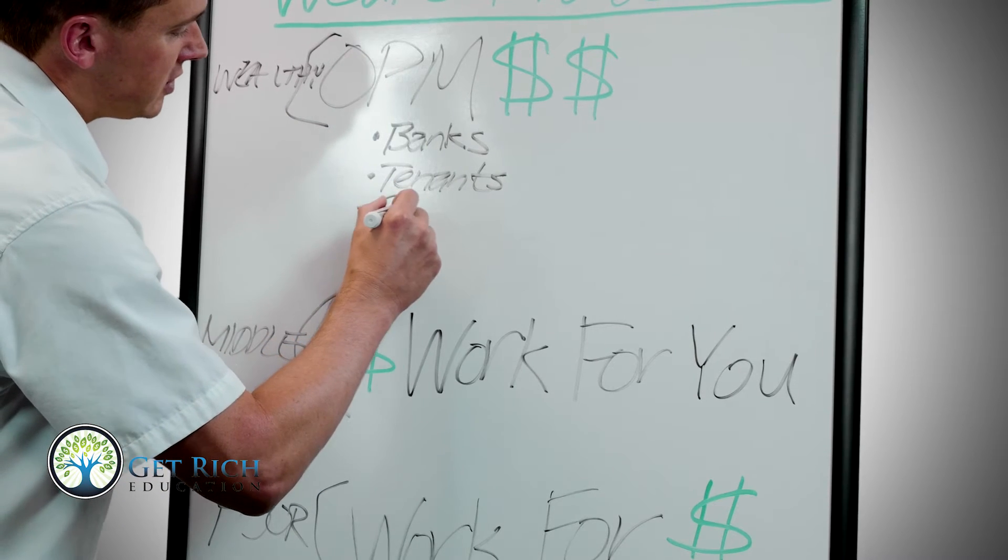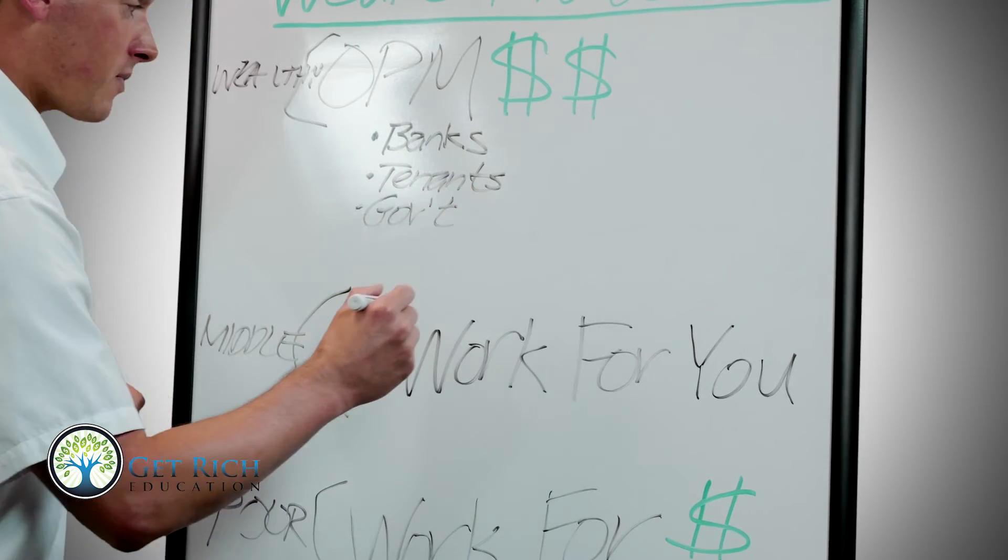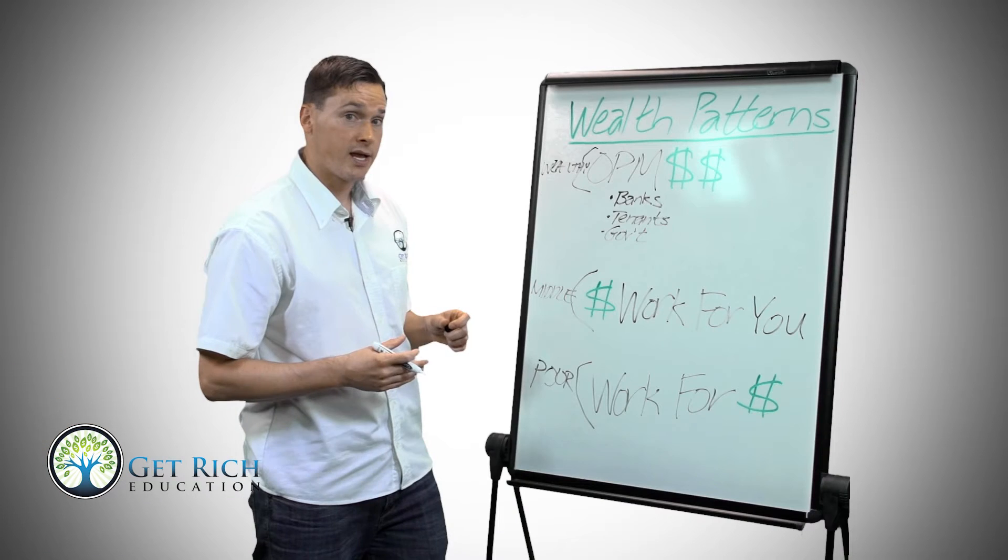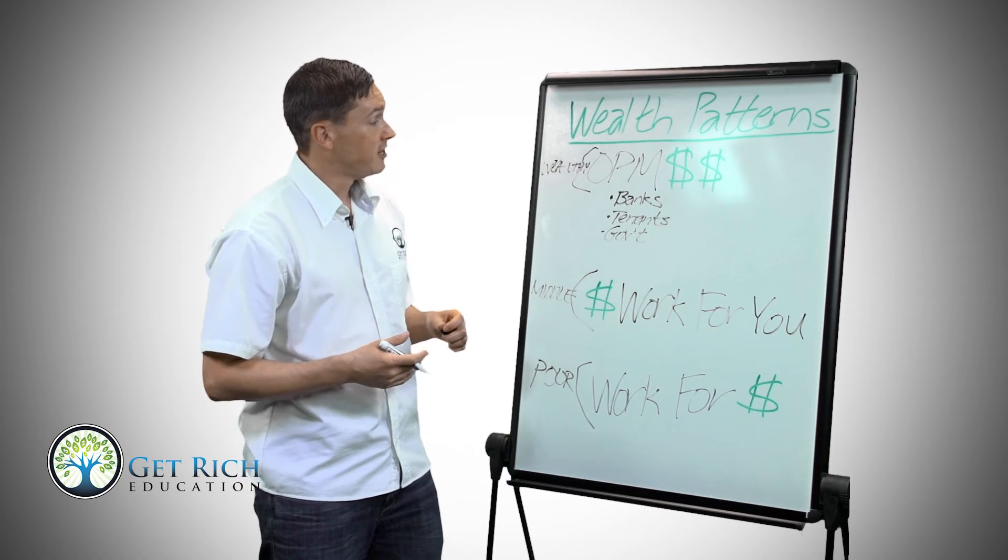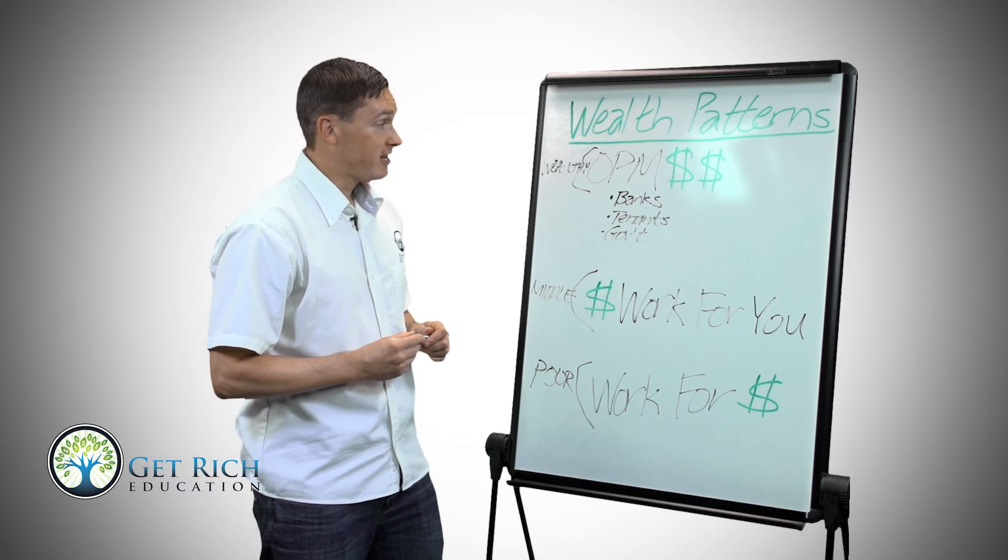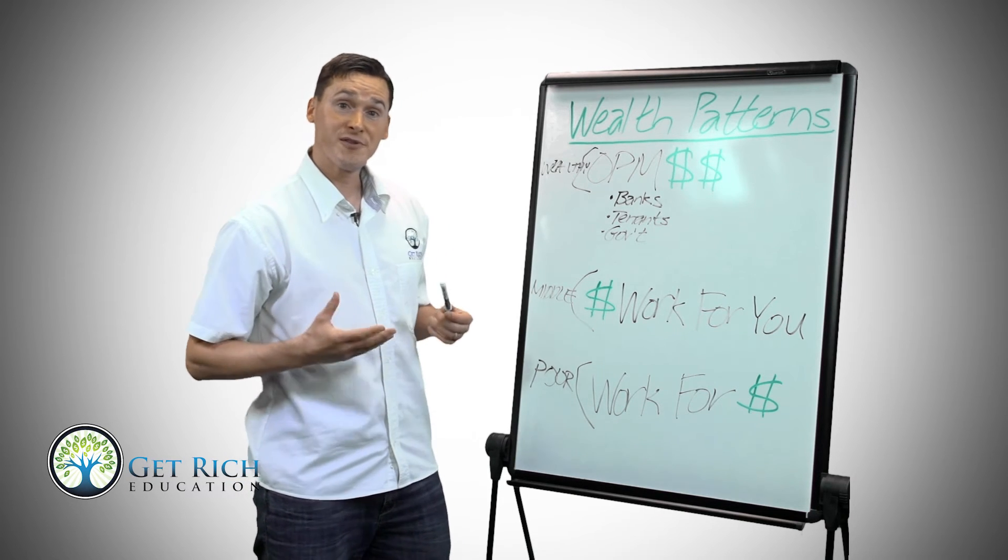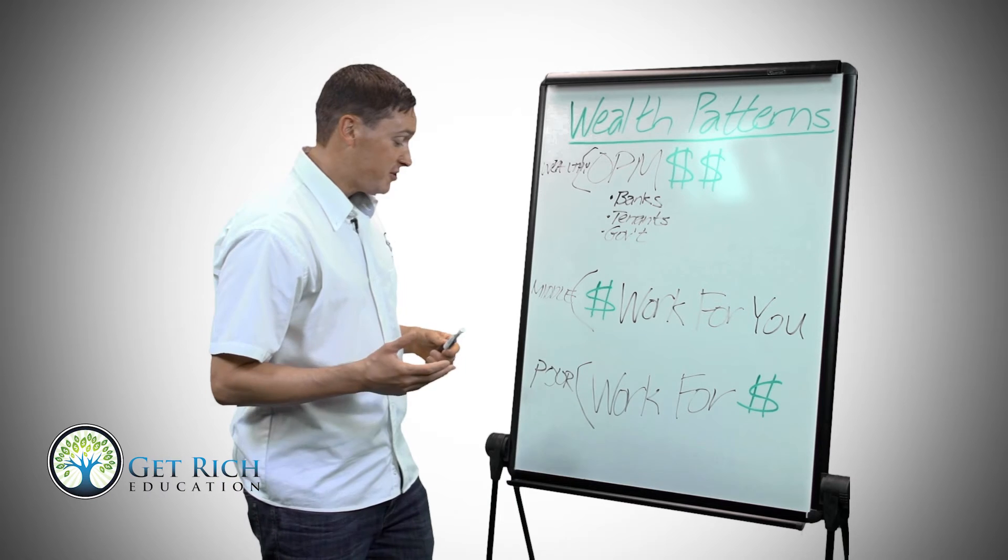And then thirdly, you're using the government's money for generous tax incentives like tax depreciation and a mortgage interest deduction. So the wealthy are getting ahead by using other people's money three ways at the same time, and you can do this too.